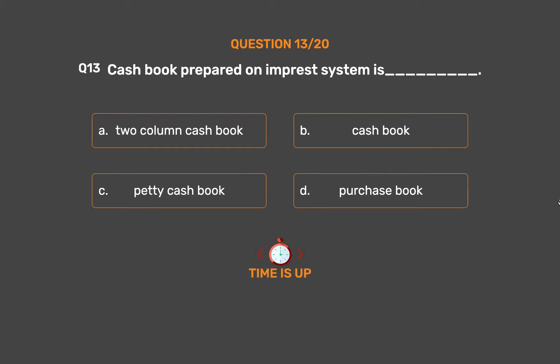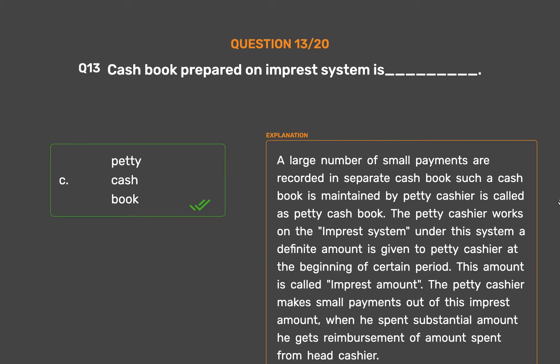The correct answer is option C: petty cash book. A large number of small payments are recorded in a separate cash book maintained by the petty cashier, called the petty cash book. The petty cashier works on the imprest system. Under this system, a definite amount is given to the petty cashier at the beginning of a certain period — this is called the imprest amount. The petty cashier makes small payments out of this imprest amount, and when a substantial amount is spent, reimbursement is obtained from the head cashier.